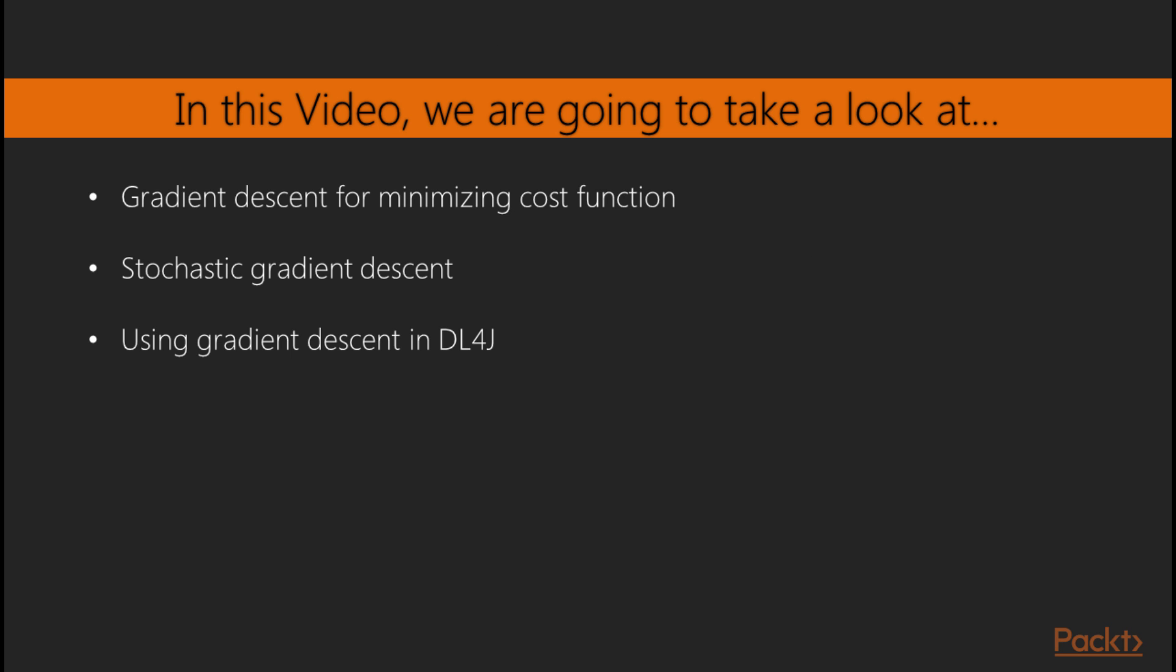After that, we'll talk about stochastic gradient descent, which is just a stochastic approximation of actual gradient descent, and we'll explain why we use them. Finally, we are going to show you the usage of stochastic gradient descent in Deep Learning 4J library.